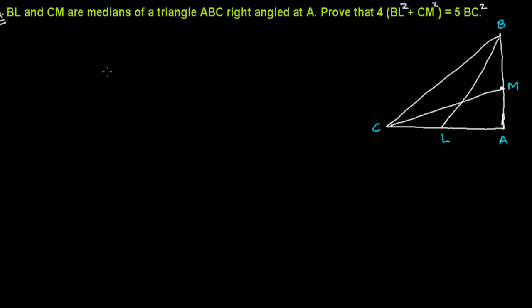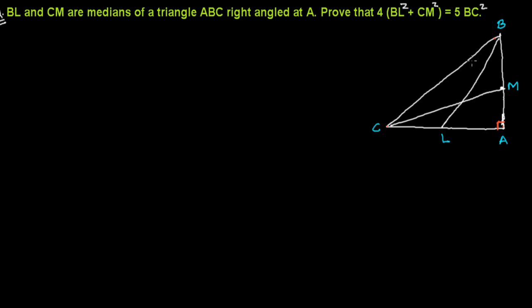Here is a question from the chapter Similarity of Triangles. BL and CM are the medians of triangle ABC, right-angled at A. We need to prove that 4 times BL squared plus 4 times CM squared equals 5 times BC squared.